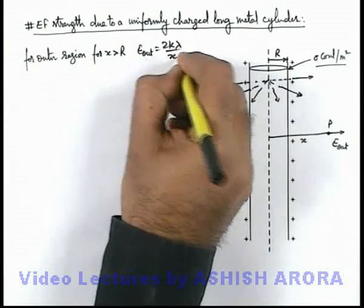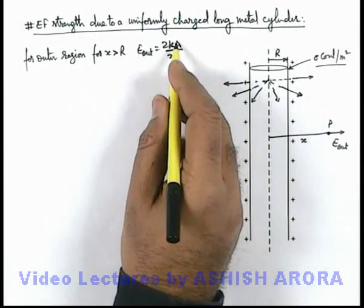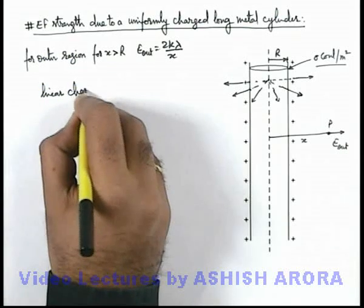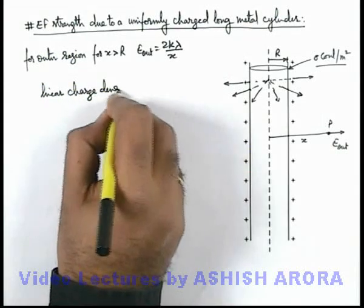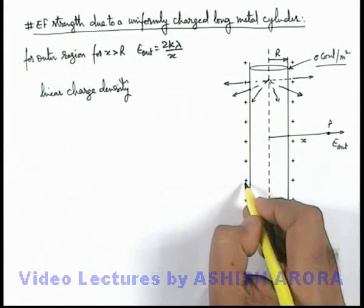2 k lambda by x which was the electric field due to a long uniformly charged thread, where lambda is the linear charge density. And in this situation linear charge density can be easily calculated as charge present on unit length of this cylinder.